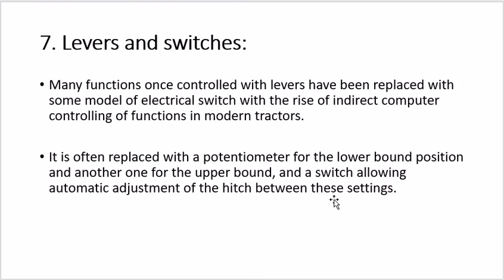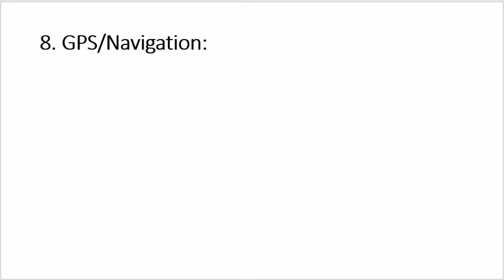The next trend is levers and switches. Levers and switches should be approachable to the driver. Most levers are now converted into switches because they are safer and easier to operate. The last trend is GPS navigation — a newer technology where the driver sits in a room, sets a map on the ground, and the tractor moves on that given path without a driver. These are the recent trends implemented in tractors for safety, performance enhancement, and technological advancement.